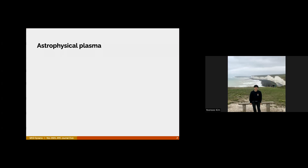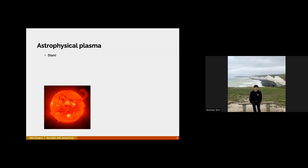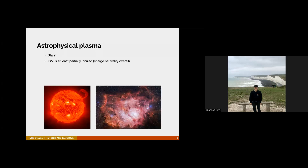Before we go into what MHD really is, we know that most of the matter in the universe exists in the form of plasma. The kinds of ionized fluid objects we have include stars, the sun, nebulae, the hot interstellar medium, and the interplanetary medium. They're not fully ionized but at least partially ionized, and they're usually magnetized — we know that magnetic fields are pervasive in this matter.